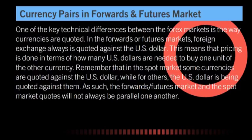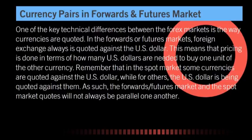As mentioned, there are three types of forex markets: the spot market, which is the most popular and common; the forwards; and the futures. One of the technical differences between these forex markets is the way currencies are quoted. In the forwards and futures markets, foreign exchange is always quoted against the US dollar, meaning the price reflects how many US dollars are needed to buy one unit of another currency. Remember that in the spot market, some currencies are quoted against the US dollar, while for others the US dollar is quoted against them. As such, the forwards, futures, and spot market quotes are not always parallel with one another.